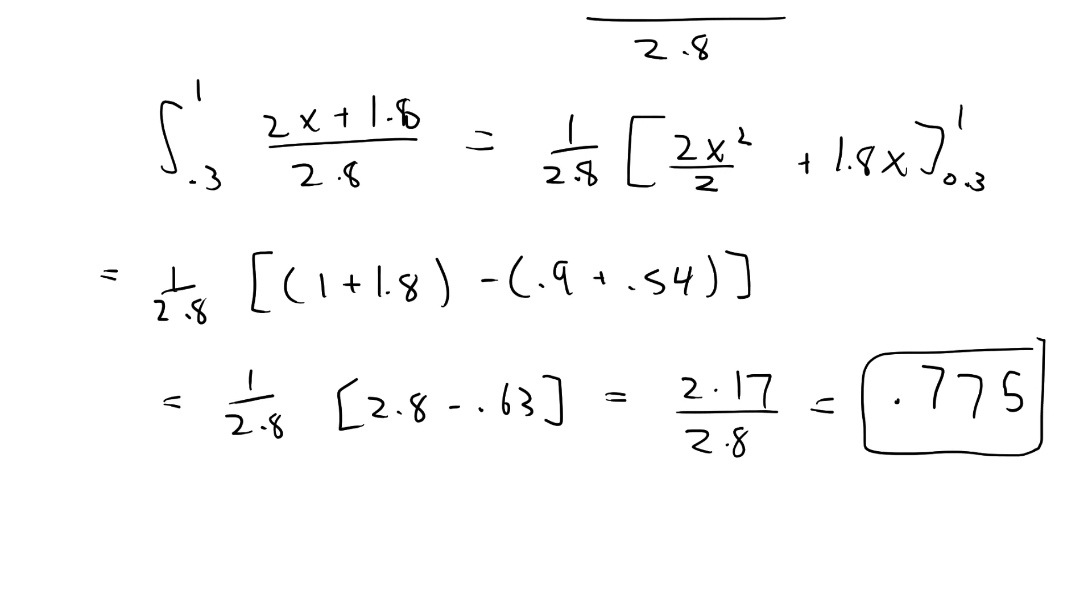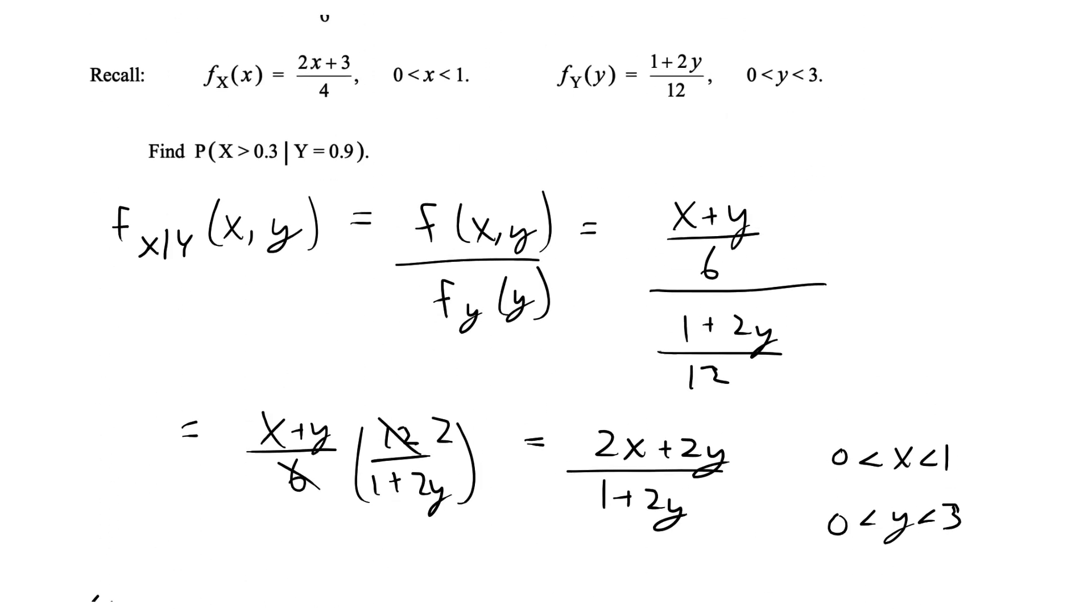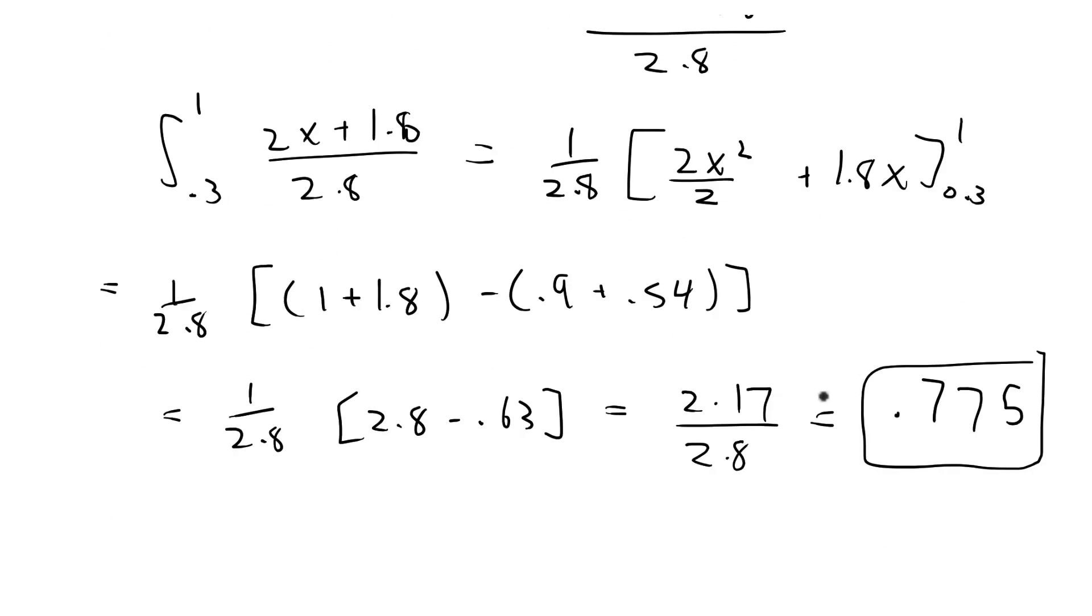This is the final answer. That's the probability that x is greater than 0.3 given that y is equal to 0.9 and we are done with this problem.